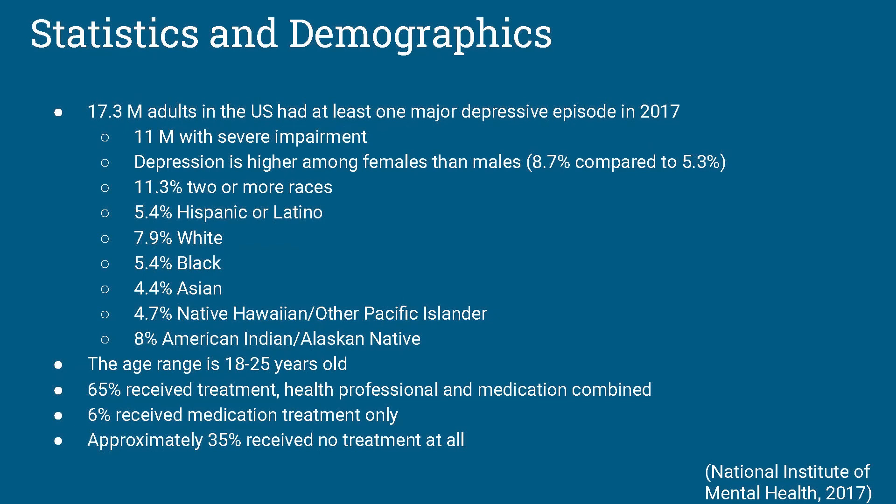To introduce a little bit about the population, our group was interested in looking at depression in adults in general and working towards that population and making a connection with the humanistic approach. On this slide, you are presented with statistics and information on demographics for adults with depression in the United States. The data was pulled from the National Institute of Mental Health website, where the 2017 data collection was completed by the National Survey on Drug Use and Health.